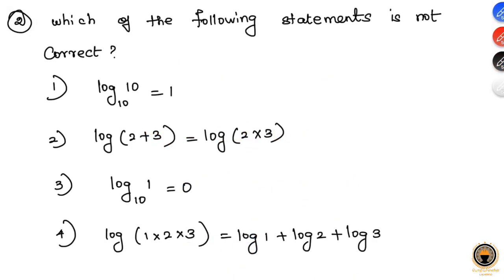Second question: which of the following statements is not correct? First option: log 10 to the base 10. The value is equal to 1 because when the number and base are equal, the log equals 1.